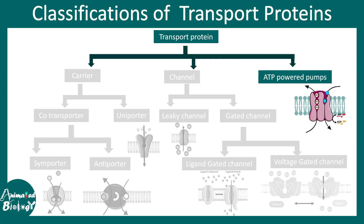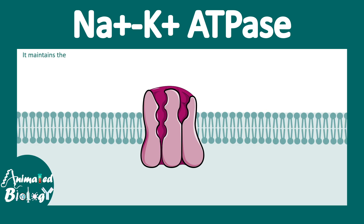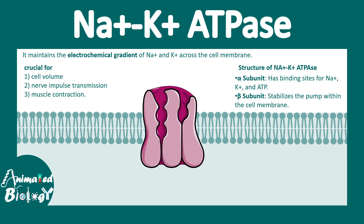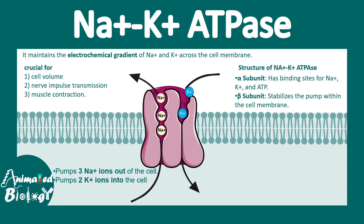Now we are talking about the last category: ATP-powered pumps. We'll take the example of the sodium-potassium ATPase, which maintains the electrochemical gradient of sodium and potassium across the cell membrane. It is crucial for cell volume, nerve impulse transmission, and muscle contraction. It has an alpha chain which holds the sodium and potassium binding subunits along with ATP, and a beta subunit that stabilizes the structure. Three sodium ions can be transported outward and two potassium ions come in, provided there is ATP hydrolysis.